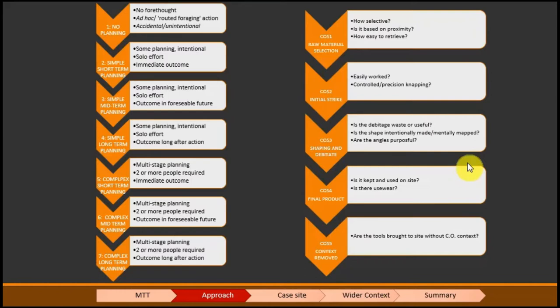The other thing I did is I created planning stages and they go from one to seven. The first one being no planning, Binford's idea of rooted foraging, just as and when you need it. Two to four is simple planning and I split those into short, medium and long term. These are solo effort, minimal action required, not a lot of planning but more than no planning. And the bottom three are complex, again split into short, mid and long term, but they have multiple stages such as core gracing, there's two or more people required because sometimes you need help getting the raw material. And what I think is most important mentioning is that for both simple and complex the long-term planning is when it's long after the action, that's anything from a couple of days to years.